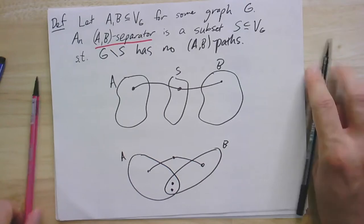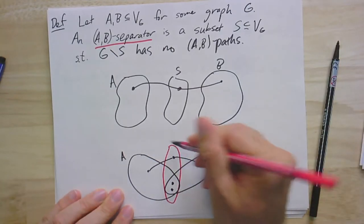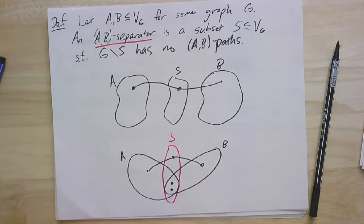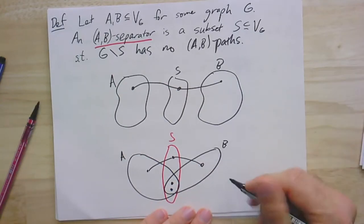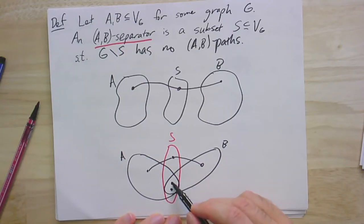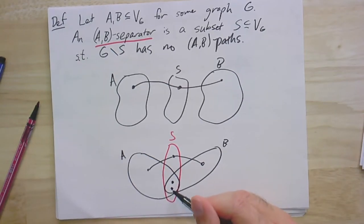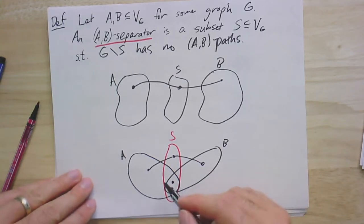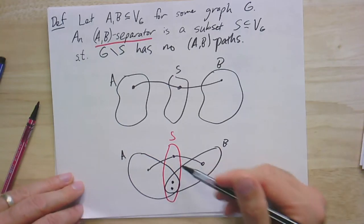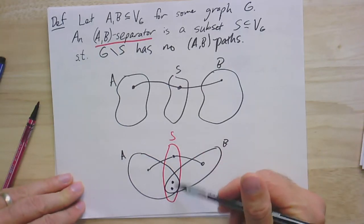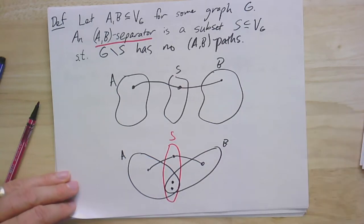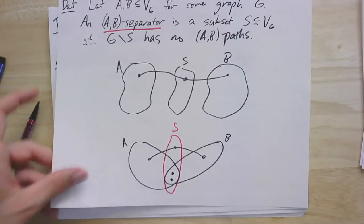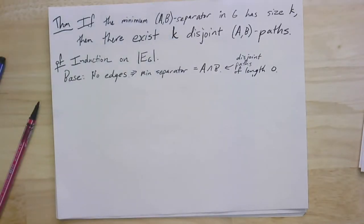It's also possible that A and B overlap. Each vertex in the intersection can be thought of as a path of length zero that goes from A to B — it begins in A and ends in B, even though it didn't take any steps. So we allow A and B to overlap; it's just clearly the case that in order to be a separator, S must contain the intersection as well. This is how you separate two sets.